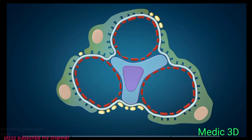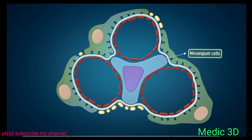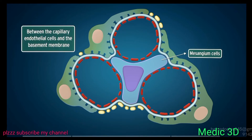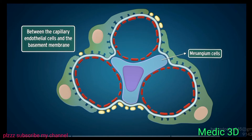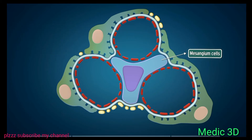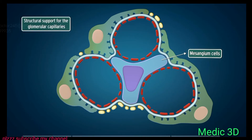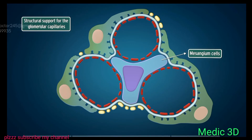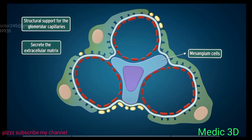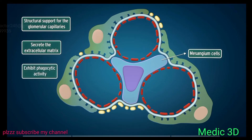The mesangium consists of mesangial cells present between the capillary endothelial cells and the basement membrane. These cells provide structural support for the glomerular capillaries, secrete the extracellular matrix, and exhibit phagocytic activity.